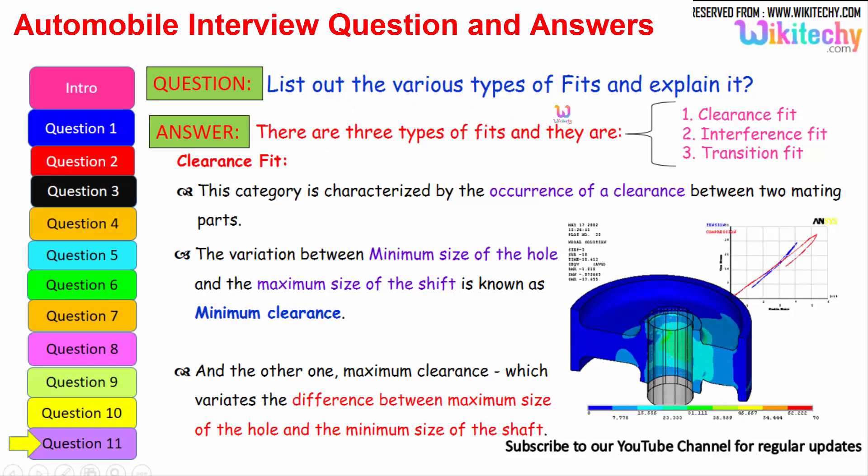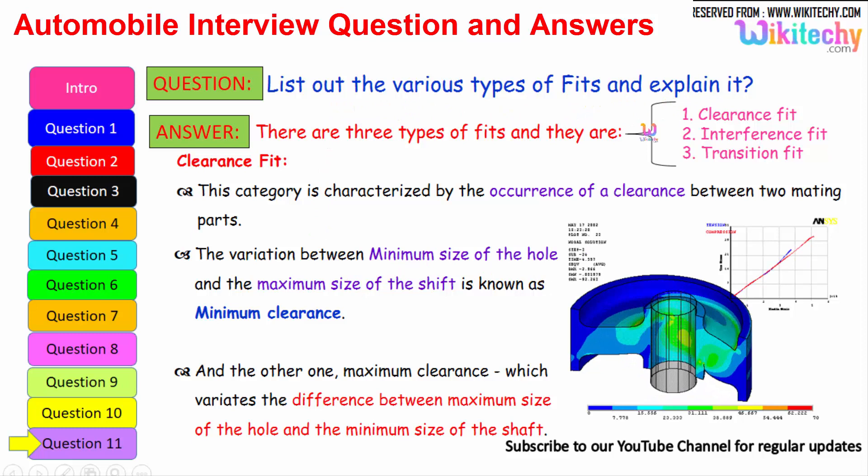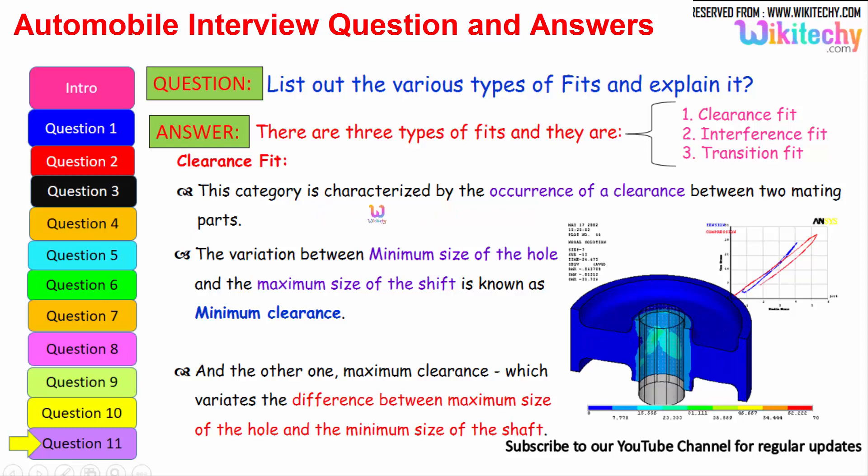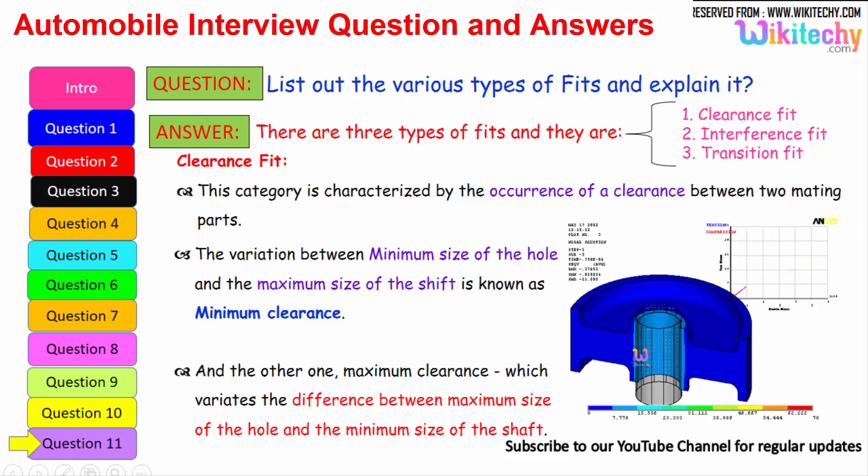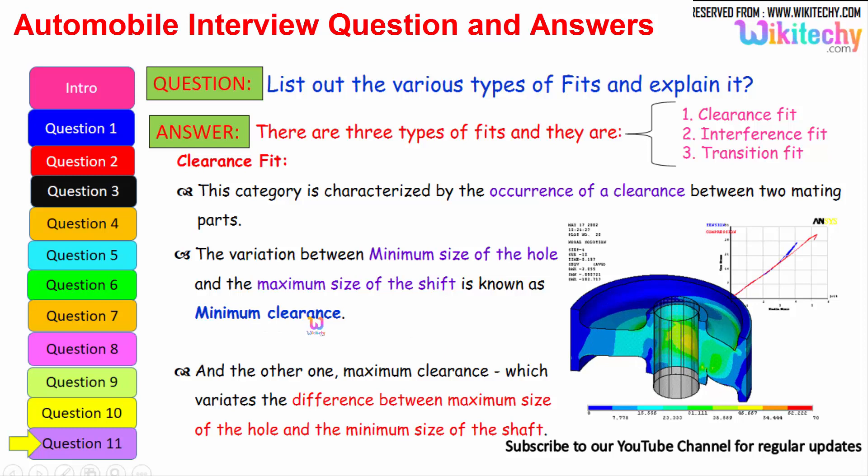Let us see the final question: list out the various types of fits and explain it. There are three types of fits available. One is clearance fit, the second one is interference fit, the third one is transition fit. This category is characterized by the occurrence of clearance between the two mating parts. The variation between the minimum size of the hole and the maximum size of the shaft is known as minimum clearance. Whereas maximum clearance will have the difference between maximum size of the hole and minimum size of the shaft. That is your clearance fit.